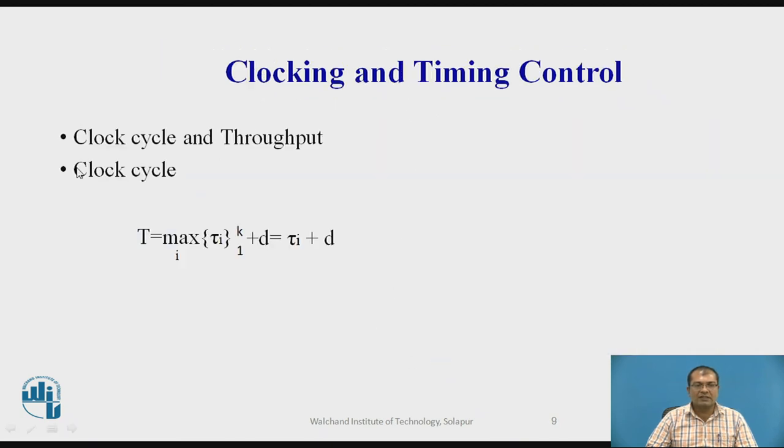So next, we will focus on the term clock cycle and its timing control. So here, the formula is given. T is equal to max of tau i, where i is varying from 1 to k, plus d, which is equal to tau m plus d. As we saw, the total time taken to one complete cycle is tau m plus d.